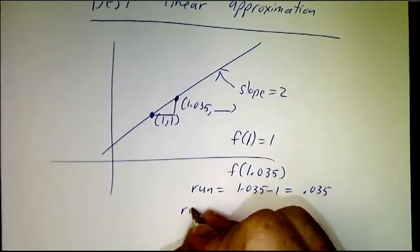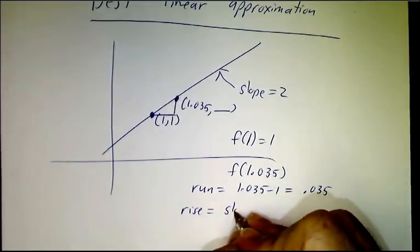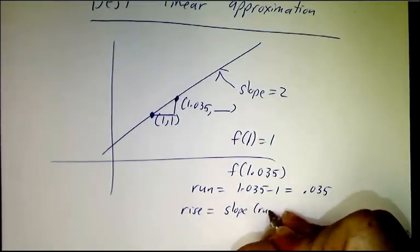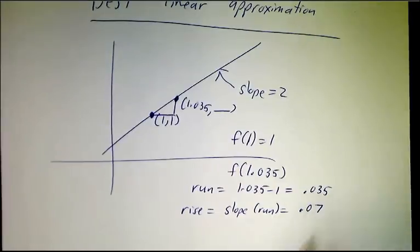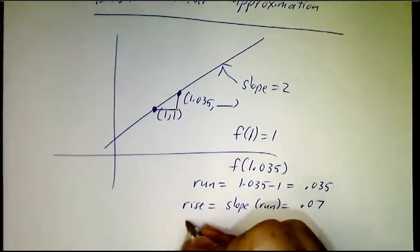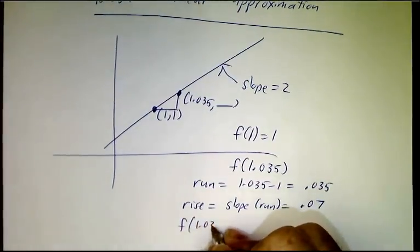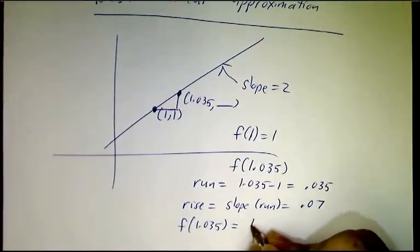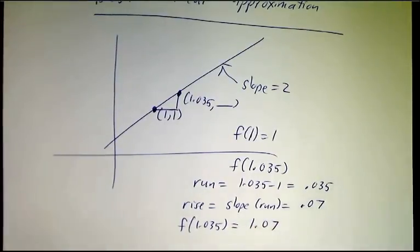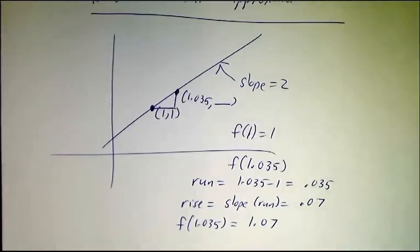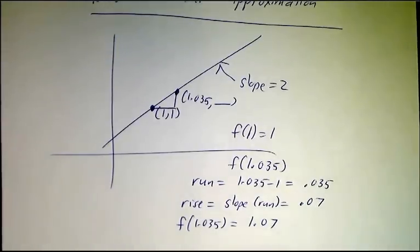And the rise is the slope times the run. So that's twice that, it's 0.07. And so that means that f(1.035) is 1.07. You learned how to deal with lines like this in your algebra class.